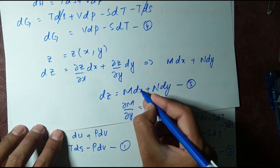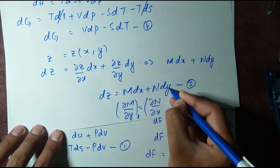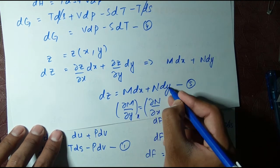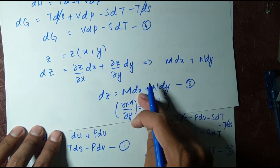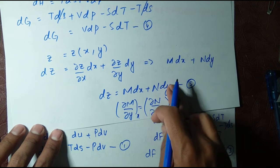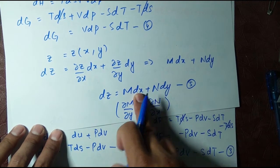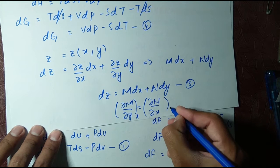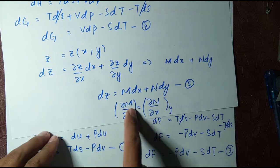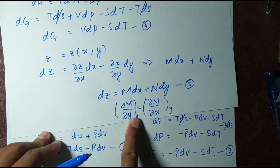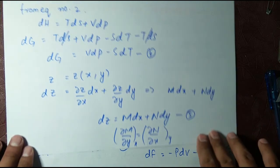For an exact equation, when taking the derivative with respect to one variable, the other is held constant. So the exactness condition is: partial M with respect to y (x constant) equals partial N with respect to x (y constant).